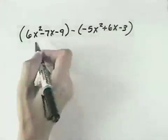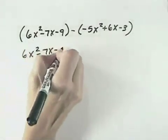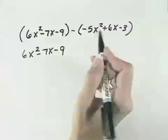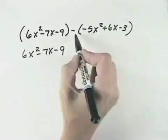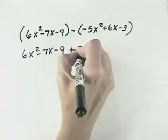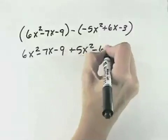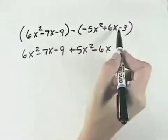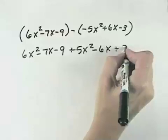Let's take a look at how we would distribute the negative through our second polynomial. For the first polynomial, we can just drop the parentheses because they're not really serving any purpose. But before dropping them in the second parentheses, we need to distribute the negative through. So the negative of negative 5x squared is positive 5x squared. Then subtracting a positive 6x becomes minus 6x. And then finally subtracting a negative 3, the two negatives again make a plus, for plus 3.